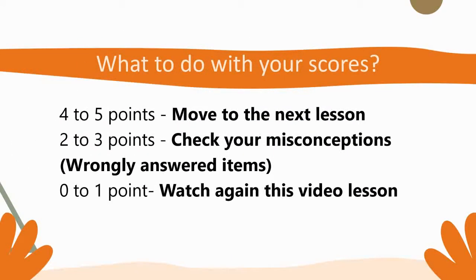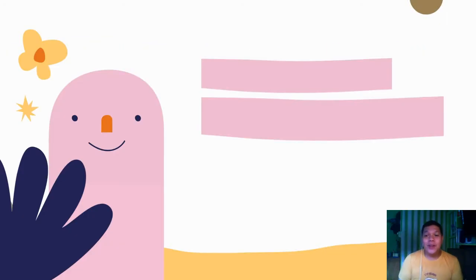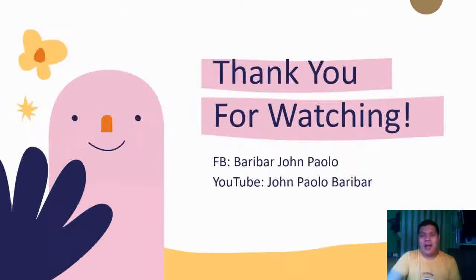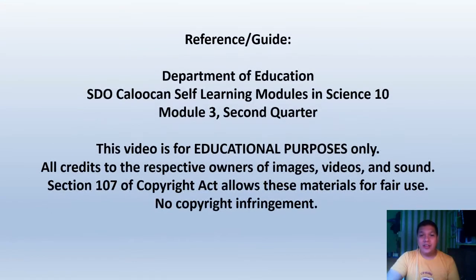That ends our check for understanding. Here is what to do with your scores: if your score is 4 to 5 points, you can move to the next lesson. If your score is 2 to 3 points, you need to check your misconceptions or wrongly answered items. If your score is 0 to 1 points, you need to watch this video lesson again. Congratulations and thank you for watching this video lesson for week 3 or module number 3 for the second quarter. Here are my Facebook and YouTube accounts so you can connect with me for any questions or suggestions. These are my references for this video lesson, and this video is intended for educational purposes only. See you next time and thank you very much!